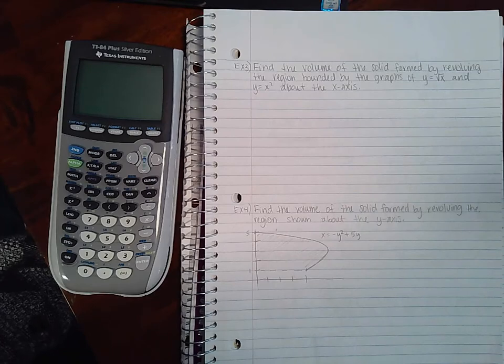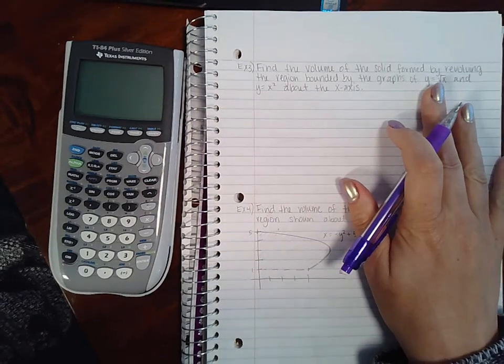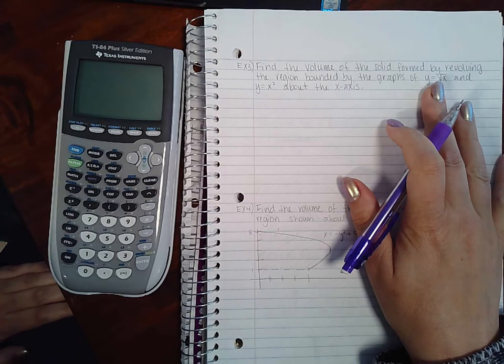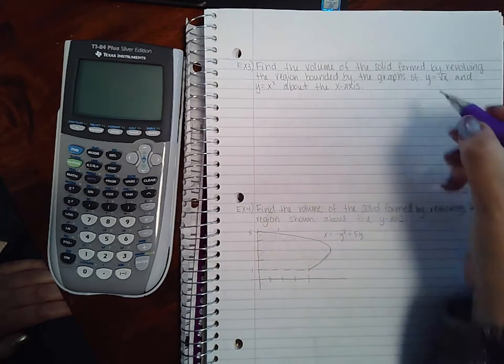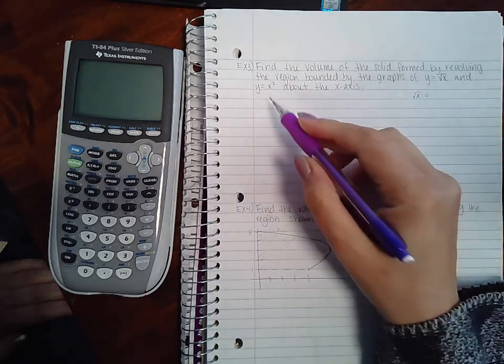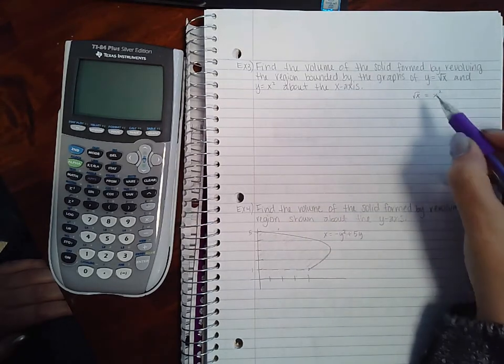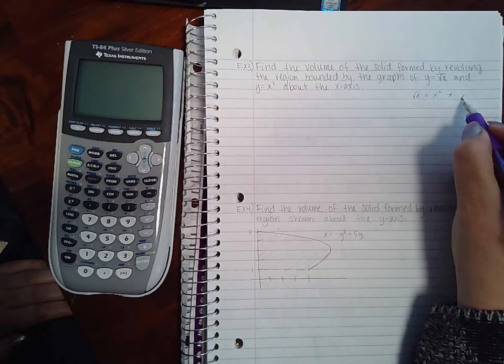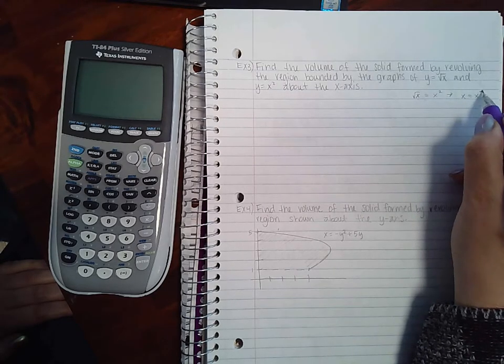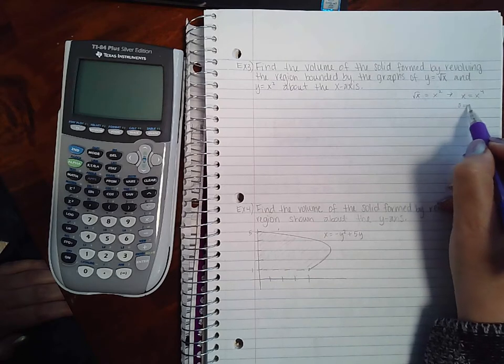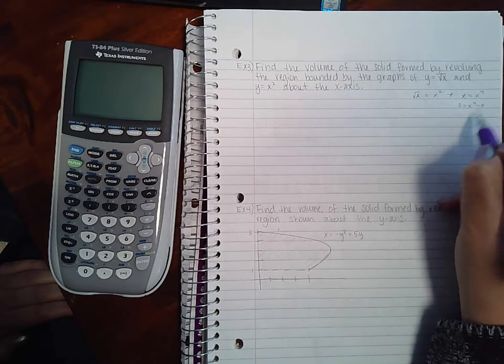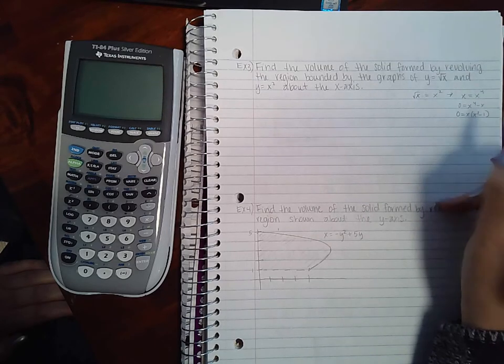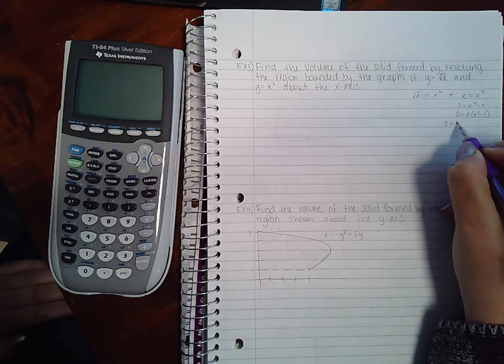So let's go ahead and draw that. Again, they do not give us our bounds, so we'll go ahead and set the two functions equivalent to each other so we can find those out. So one function equal to our other function. To get rid of the square root I'm going to square both sides, which means I'll end up with x equal x to the fourth. Then I'll minus the x to the right hand side, factor out an x.